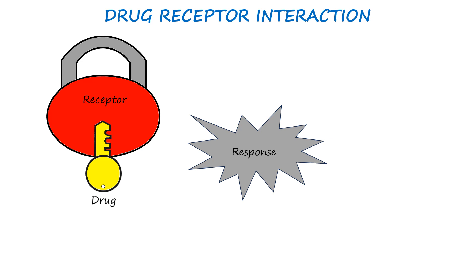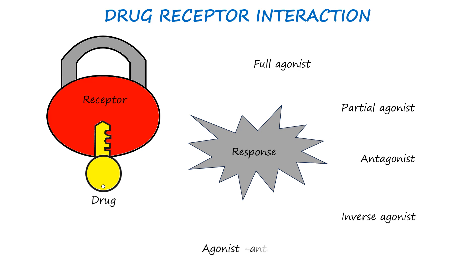The binding of a drug to its receptor can either activate or inhibit the receptor. Depending on this response, the drug can be classified as a full agonist, partial agonist, antagonist, inverse agonist, or agonist-antagonist.